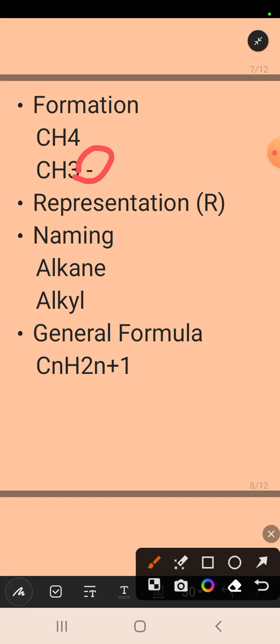Representation is the next heading. These alkyl radicals are represented by capital R. Next is naming: how do we name them? We name them by replacing the 'ane' ending in the name of an alkane with 'yl'.